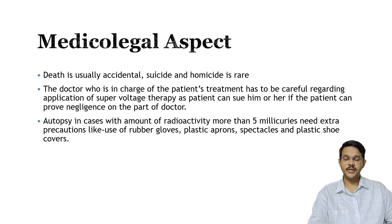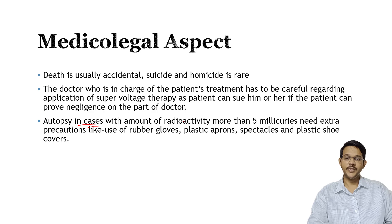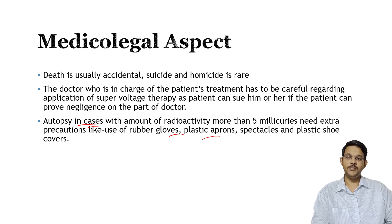Regarding the medical aspects of ionizing radiation injuries: death is usually accidental; suicidal or homicidal radiation deaths are very rare. A doctor treating with radioactive material should be very careful, as higher doses may cause damage and the patient may sue the doctor for negligence. In case of death due to radiation exposure, the person handling the body must wear protective measures like gloves, plastic aprons, and plastic shoe covers, because radioactive material does not become inert immediately after death and may still emit gamma rays.